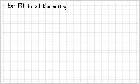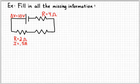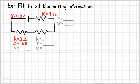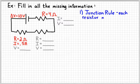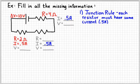Let's look at another example using all three of our big circuit rules. We have a circuit with three resistors. We know the battery voltage is 10 volts, one resistor has a value of 2 ohms, the second has a value of 4 ohms, and the current through the first resistor is 0.5 amperes. The first thing to realize is that the junction rule applies — since each resistor is part of the same loop, each has to have the same current, so all resistors have a current of 0.5 amperes.